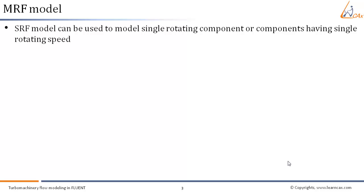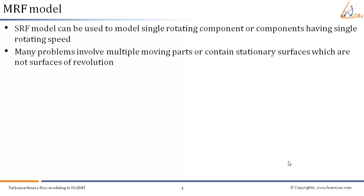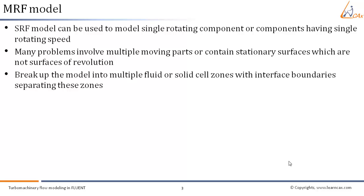In the previous session we saw how the SRF model can be used to model a single rotating component or components having a single rotating speed. Many problems involve multiple moving parts or contain stationary surfaces which are not surfaces of revolution. Hence, for these we cannot use the single reference frame modeling approach. For these problems we must break up the model into multiple fluid or solid cell zones with interface boundaries separating these zones.